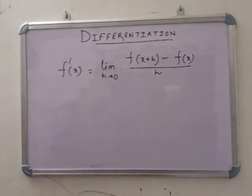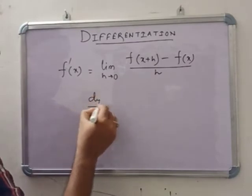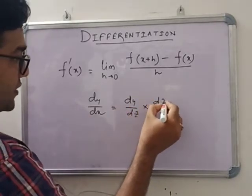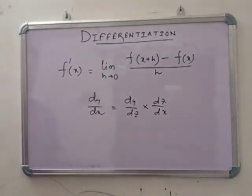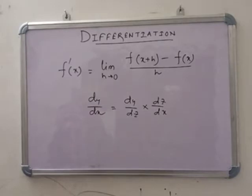In the first part we are going to discuss about the composite function. In the chain rule we see that dy/dx can be written by dividing with any intermediate variable — that is, dy/dx = (dy/dz) · (dz/dx) if the functions are expressed in z. We also use some basic rules from class 11, such as d/dx(sin x) = cos x and d/dx(log x) = 1/x.